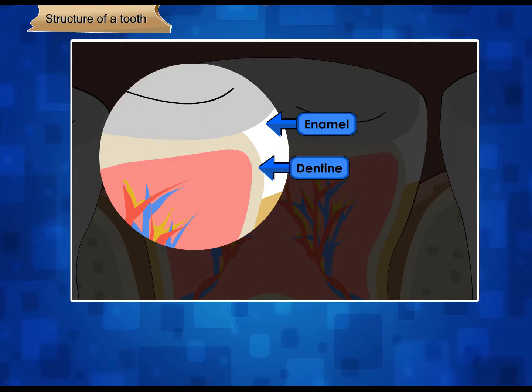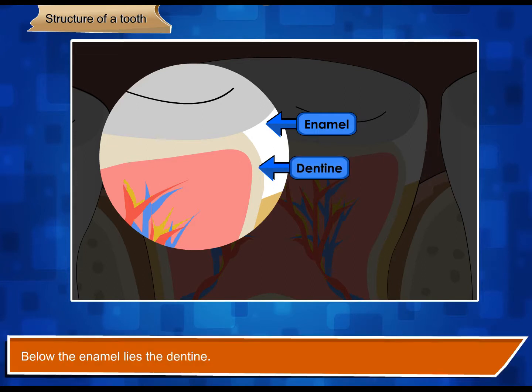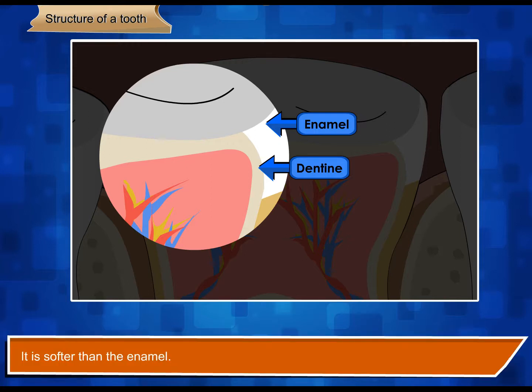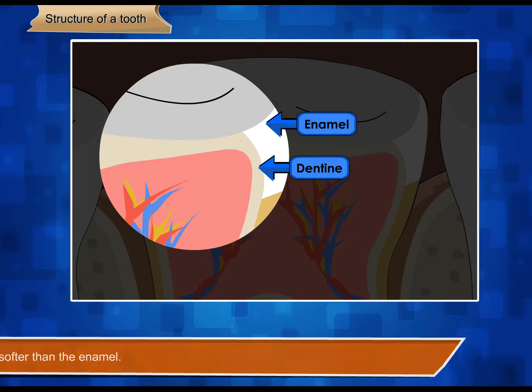Dentine. Below the enamel lies the dentine. This is a yellow bone-like layer that supports the enamel. It is softer than the enamel.